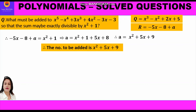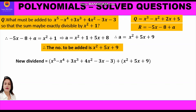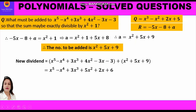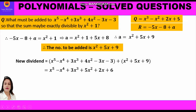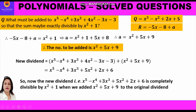The number to be added is x² + 5x + 9. Adding this to the original dividend gives the new dividend: (x⁵ - x⁴ + 3x³ + 4x² - 3x - 3) + (x² + 5x + 9) = x⁵ - x⁴ + 3x³ + 5x² + 2x + 6. This new dividend is completely divisible by x² + 1.